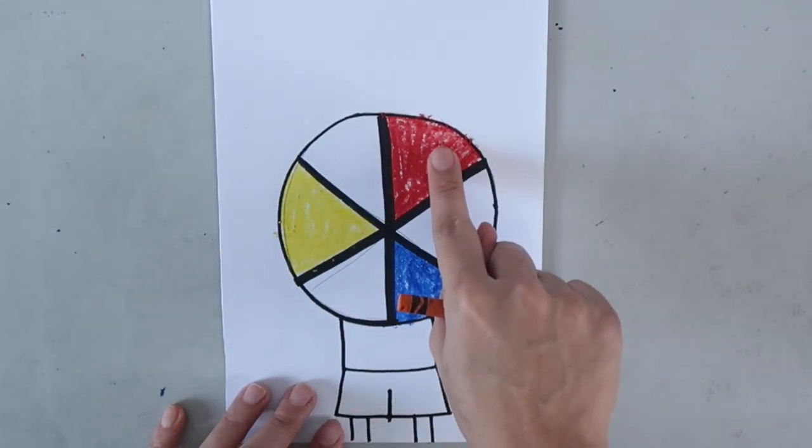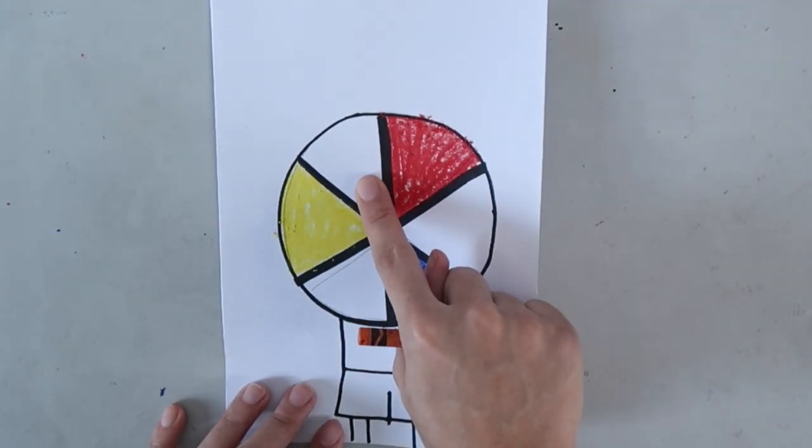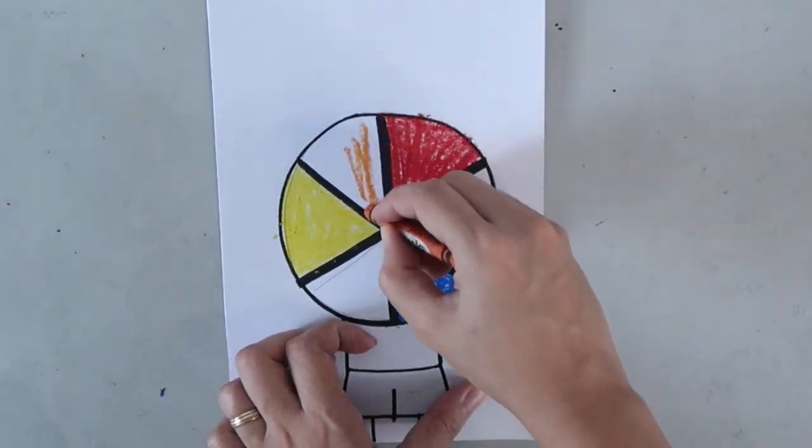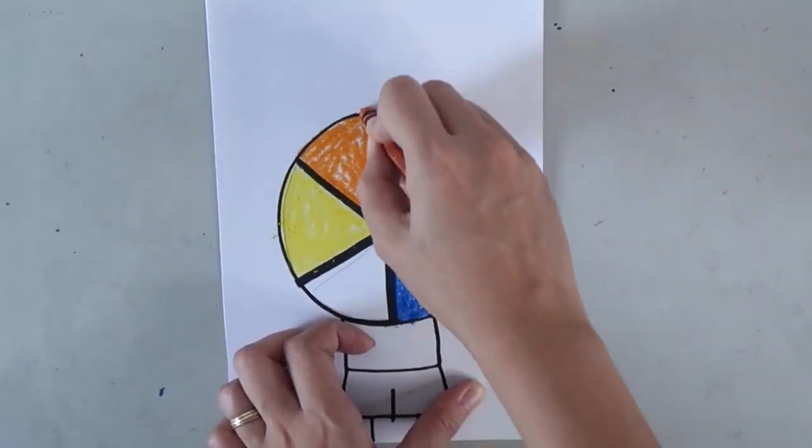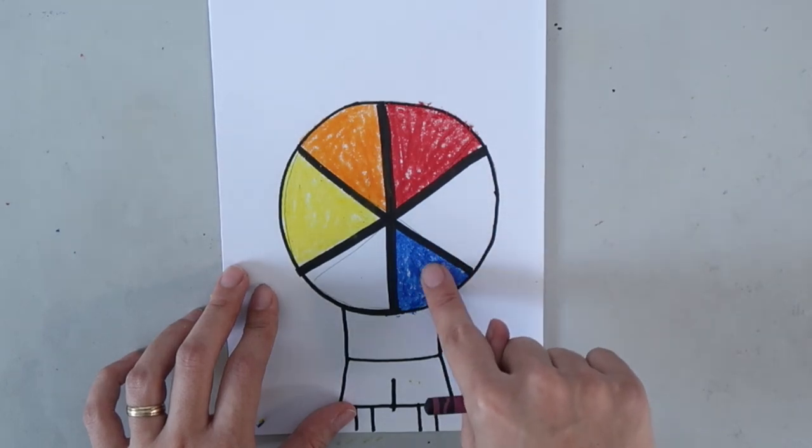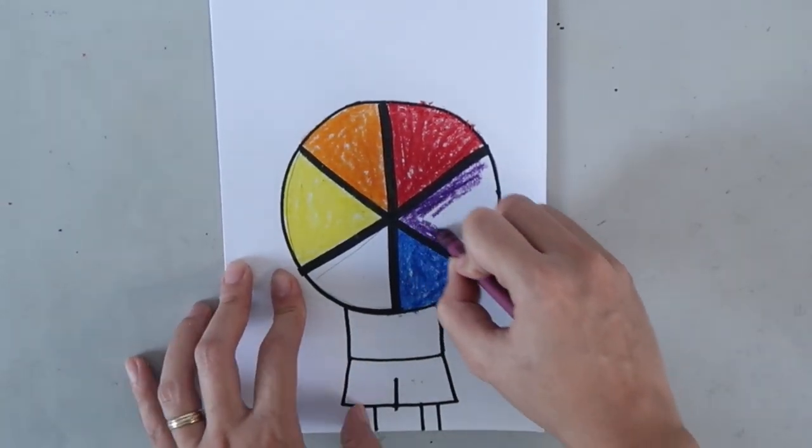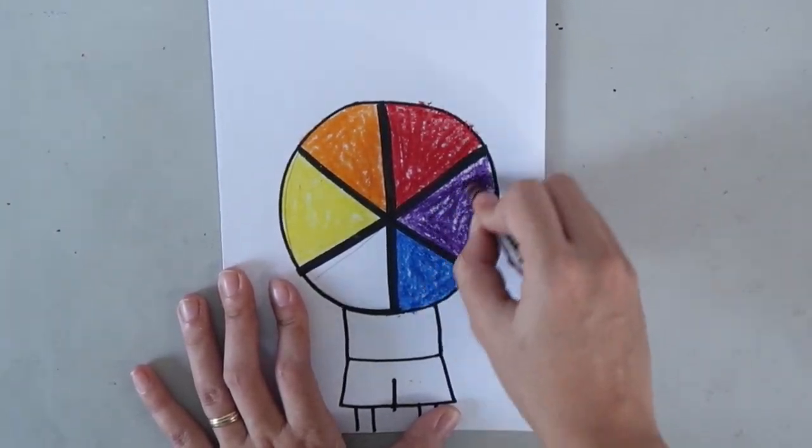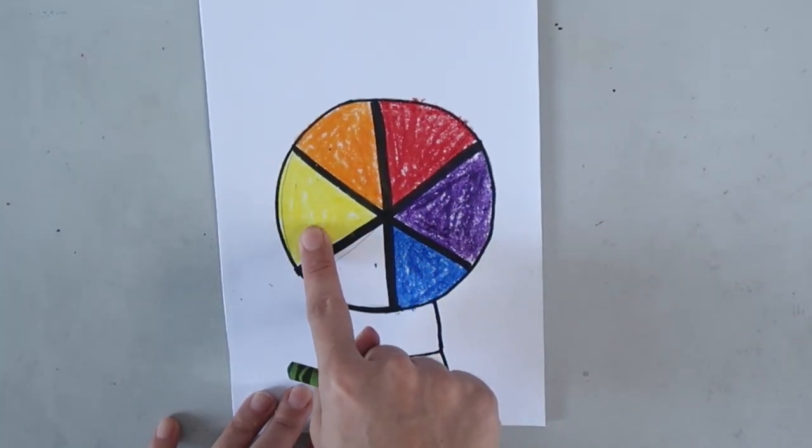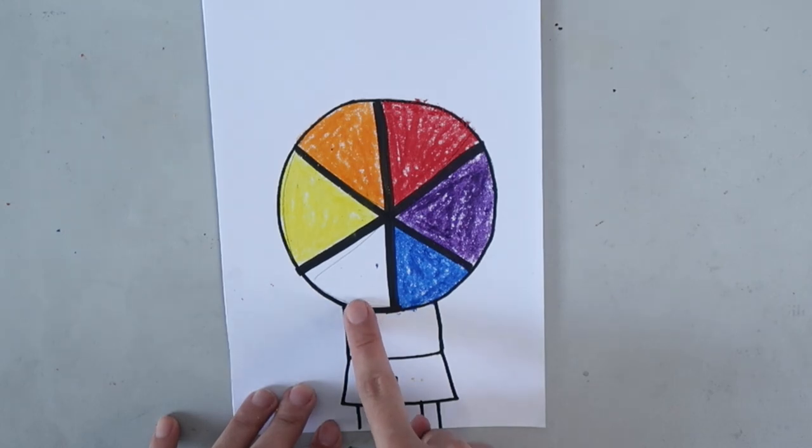When you mix yellow and red, you're going to create the color orange. So, we'll color the middle part orange. When you mix red and blue, you get purple. When you mix blue and yellow, you create green.